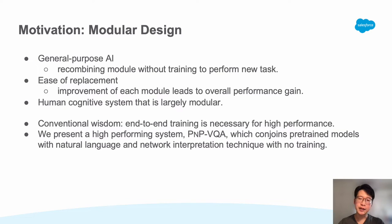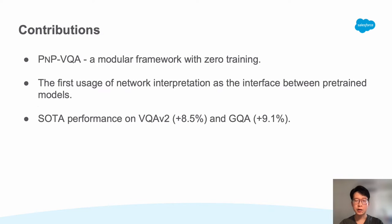Previous work has demonstrated that it is difficult and borderline impossible to obtain high performance without any kind of end-to-end training. On the contrary, we present PNP-VQA, a high-performing system that conjoins pre-trained models with natural language and network interpretation techniques with no training. Our contributions are: we propose a modular framework with no training; to the best of our knowledge, our work is the first to use network interpretations as interface between pre-trained models; and our method achieves state-of-the-art performance on VQA-V2 and GQA.